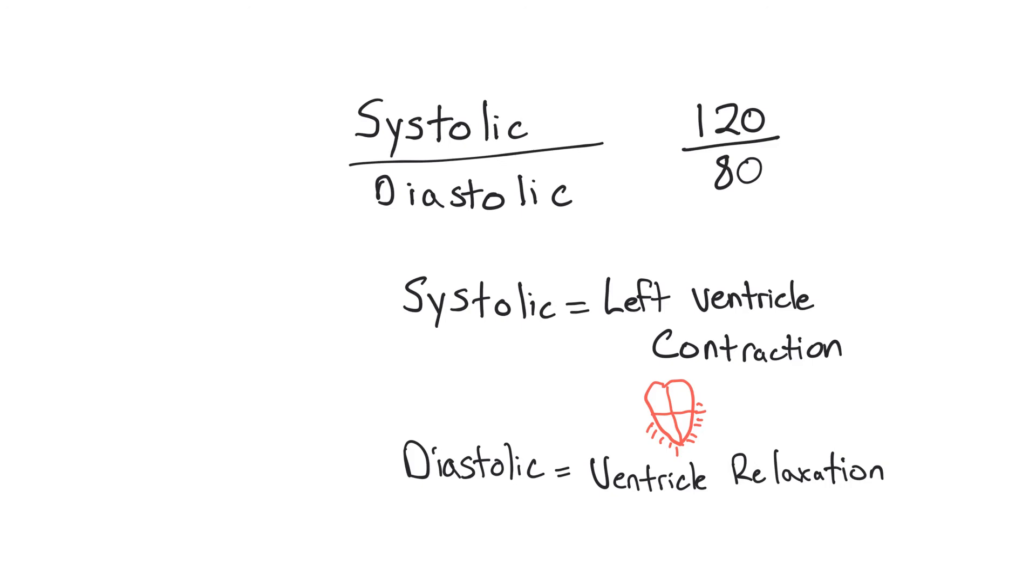But what do these two things represent? And the systolic or systole, that means the contraction. And we usually, when we're talking blood pressure, we always are thinking the left contraction. There is a way to measure the blood pressure from the right ventricle contracting.